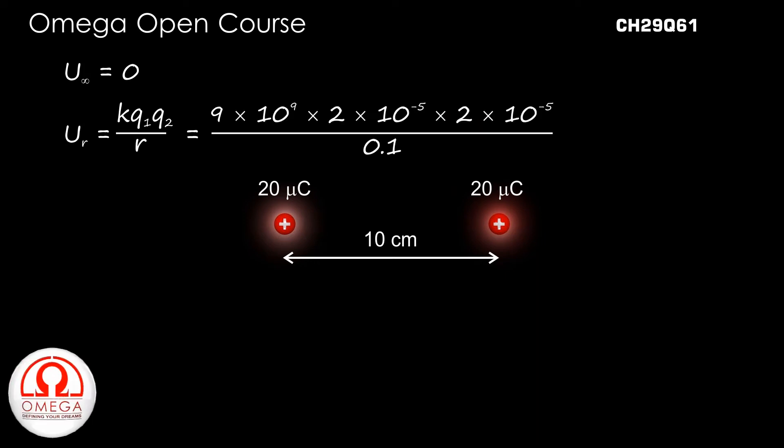Putting K is equal to 9 x 10 to the power 9, Q1 and Q2 as 2 x 10 to the power minus 5, and R is equal to 0.1 and simplifying, we get 36 J. This is our answer.